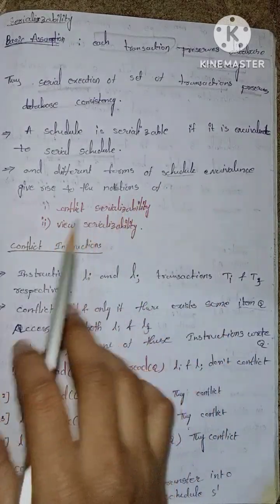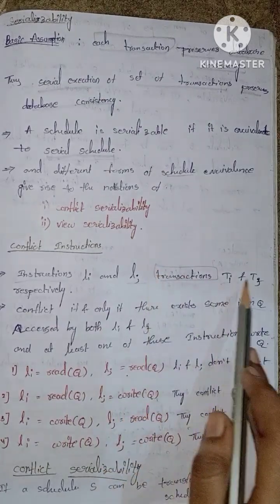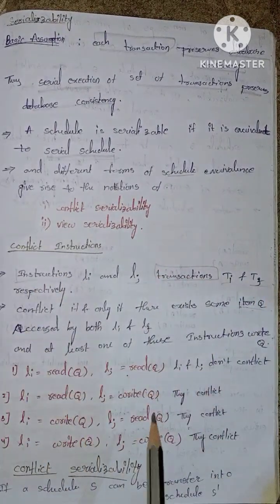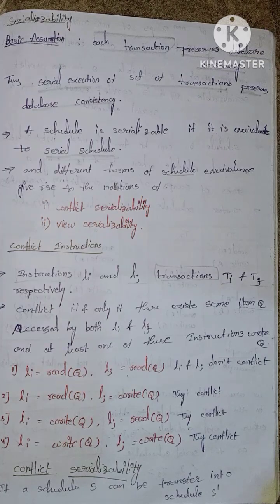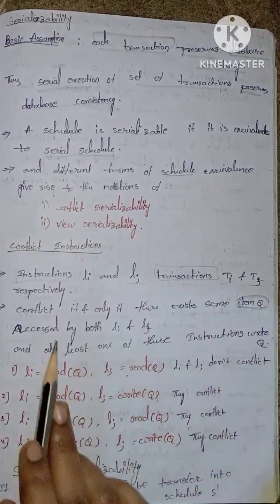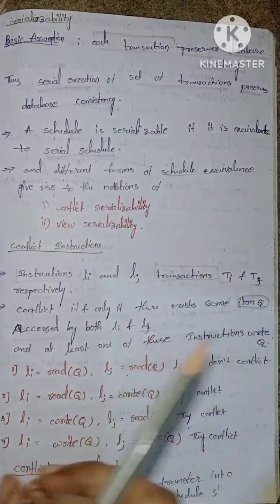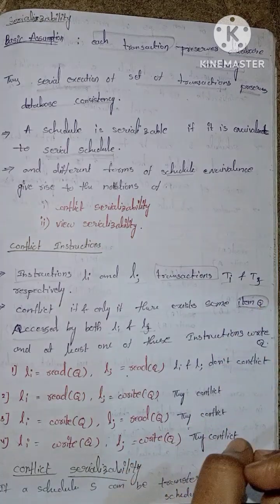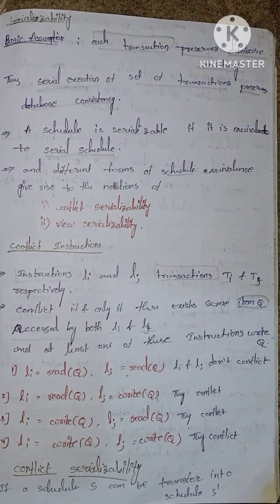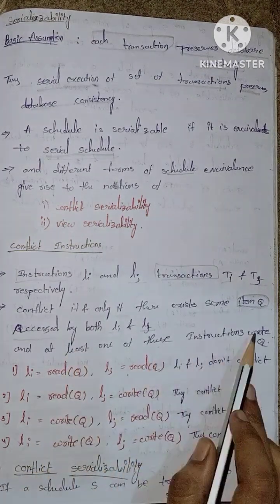Conflict instructions: instructions Li and Lj of transactions Ti and Tj conflict if and only if there exists some item Q accessed by both Li and Lj, and at least one of these instructions wrote Q.